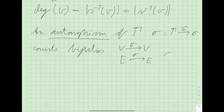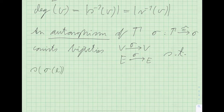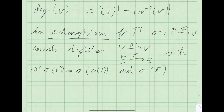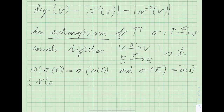These bijections must preserve the source and range — or the incidence relation — in the graph. So we demand that the source of sigma(E) equals sigma of the source of E. We also want it to respect the inversion map, so sigma of E-bar equals the bar of sigma(E), and it then follows that the range of sigma(E) equals sigma of the range of E.